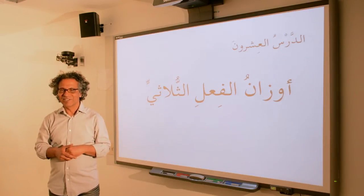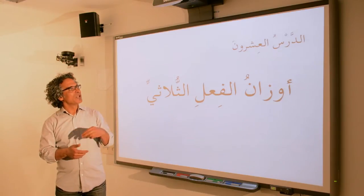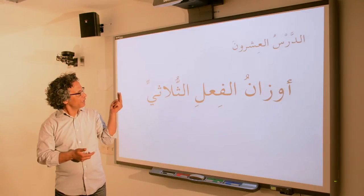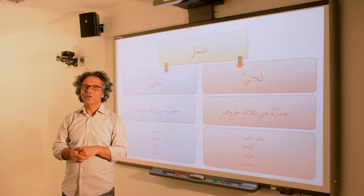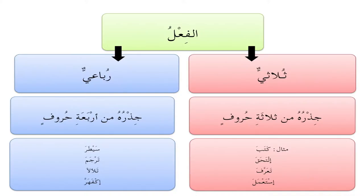طلاب العربية، طالبات العربية، أهلا وسهلا بكم في درس جديد من المنهج، وهو الدرس العشرون: أوزان الفعل الثلاثي. The forms or patterns of a verb based on a root made of three letters. الفعل في العربية ثلاثي أو رباعي — the root of the verb is based either on three letters or four letters. Most of the verbs in Arabic fall within the trilateral category.